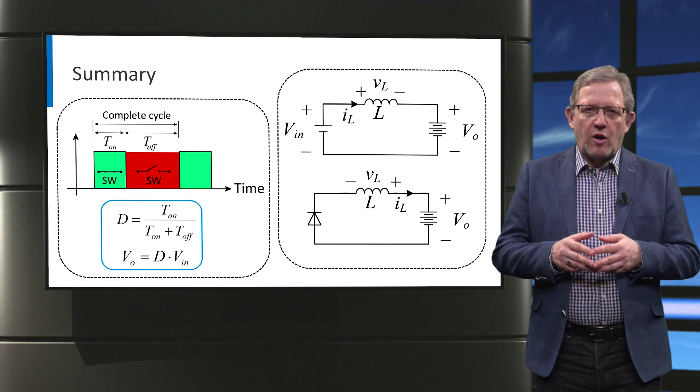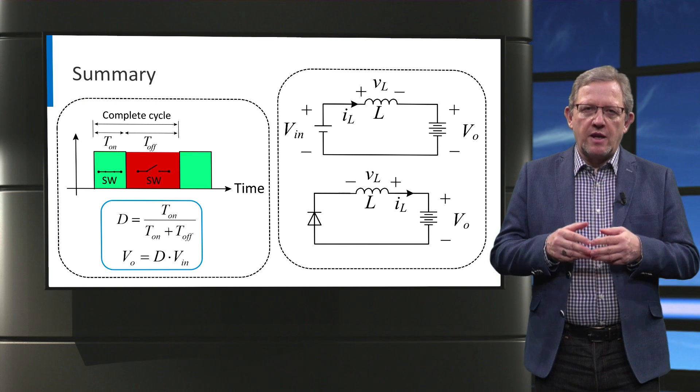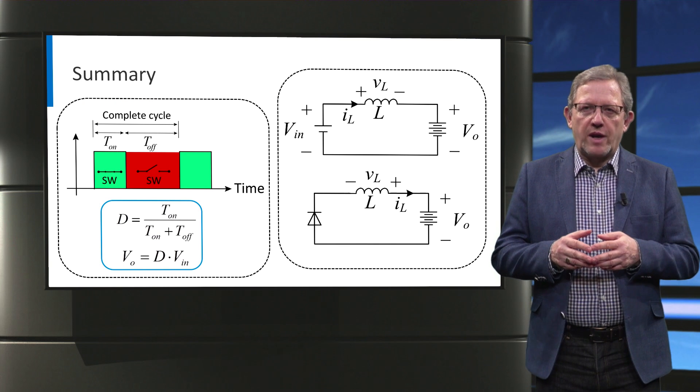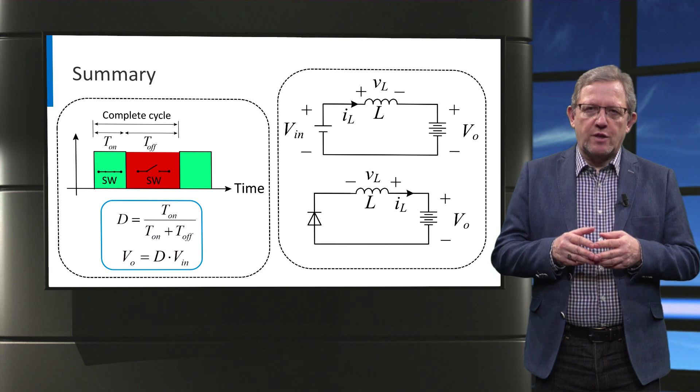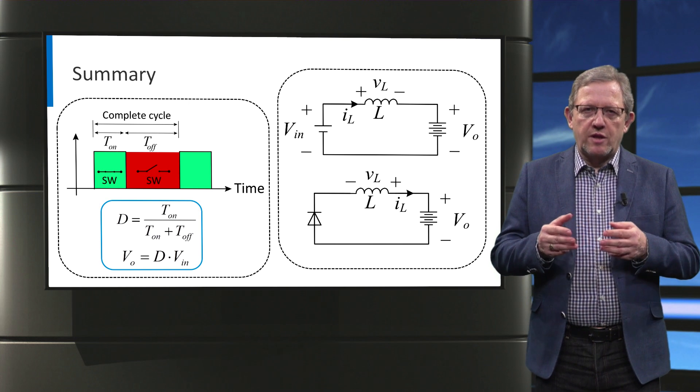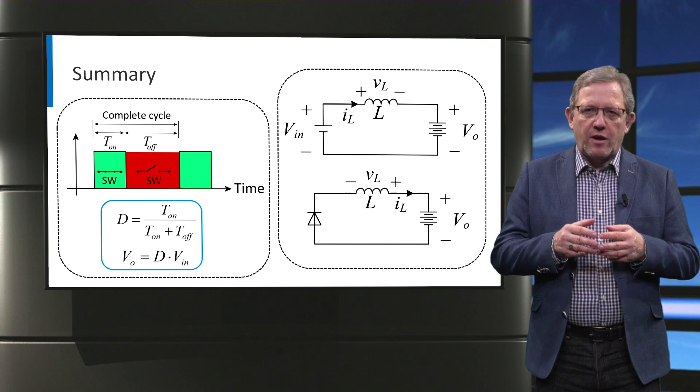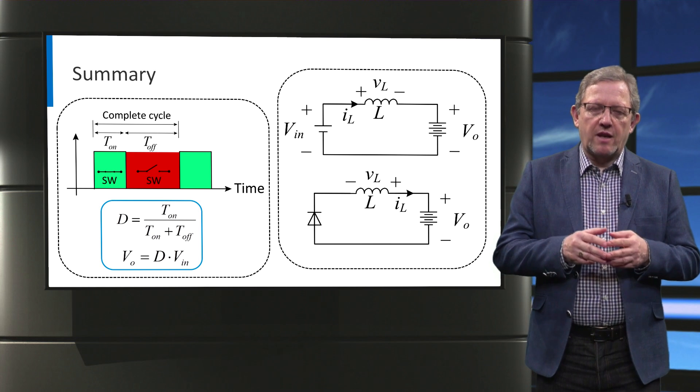To wrap up, in this video we focused on one of the most common DC to DC power converters, namely the buck or step down converter. We evaluated two operating states of the converter during on time and off time of the switch. We introduced the concept of duty cycle and saw how the output of the buck converter is simply the product of input voltage and the duty cycle.